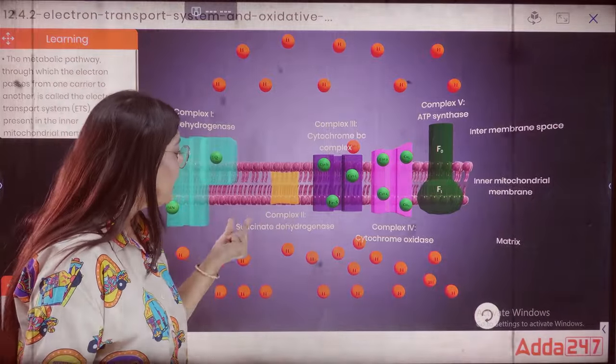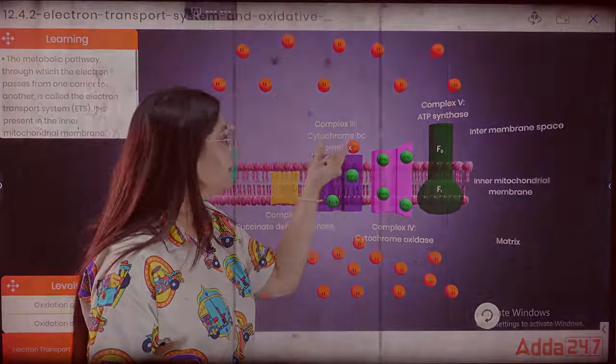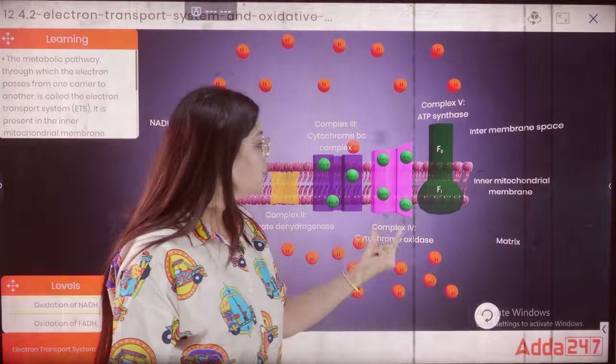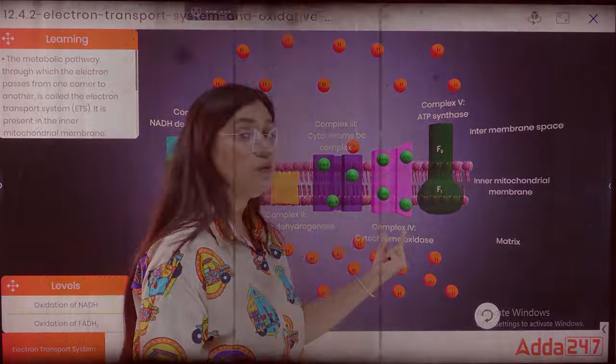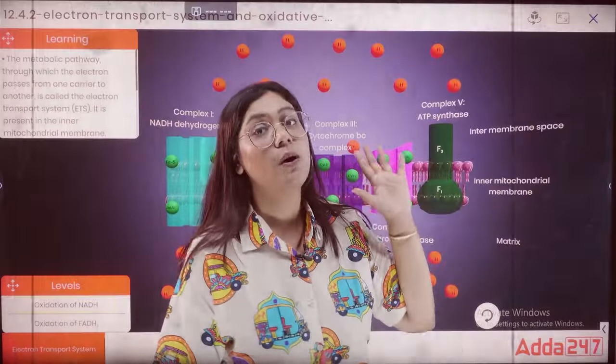The second complex is succinate dehydrogenase. The third complex is cytochrome BC complex. The fourth complex is cytochrome oxidase. And the last is our F0-F1 particle, ATP synthase, which is complex 5.